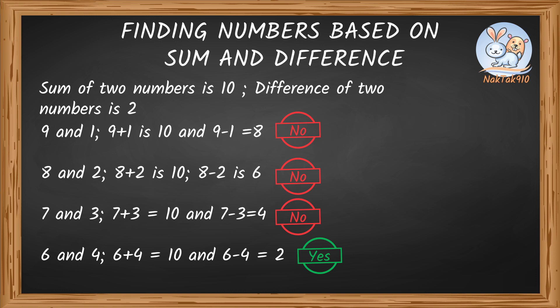Right. Your guessing game worked because they're small numbers. What if two numbers are big, like 55 and 70, or 35 and 80? I don't think I can keep guessing like this. It's going to take forever.